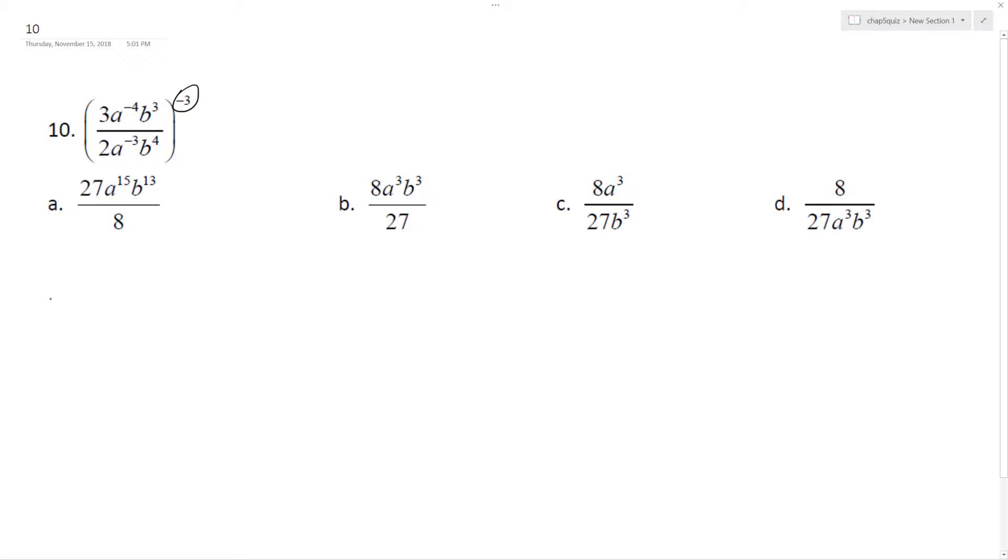So starting off, this becomes, this actually becomes 1 over 27, A raised to the 12th, and then B raised to the negative 9th.